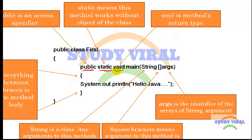The third thing is 'void'. Void is the return type of the main method, similar to C and C++. Void means it returns nothing, so the main method returns nothing — that is why there is a void return type.